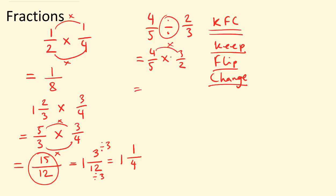Four times three is 12, and five times two is 10. So we have 12 tenths, and again this is an improper fraction, so we need to change it into a mixed number. Ten goes into 12 once, and we have 2 remainder — so one whole and two tenths. Again, this answer is not in simplest form, so we need to simplify two tenths: two divided by two is one, ten divided by two is five. So the final answer is one and a fifth.